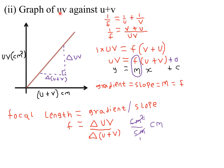We now look at the graph of the product of u and v against the summation of u and v. For this case, the units of uv are centimeters squared, since u and v are both in centimeters. And u + v gives centimeters plus centimeters, which is still centimeters. The graph of uv against u + v will always be a straight line graph starting from the origin.